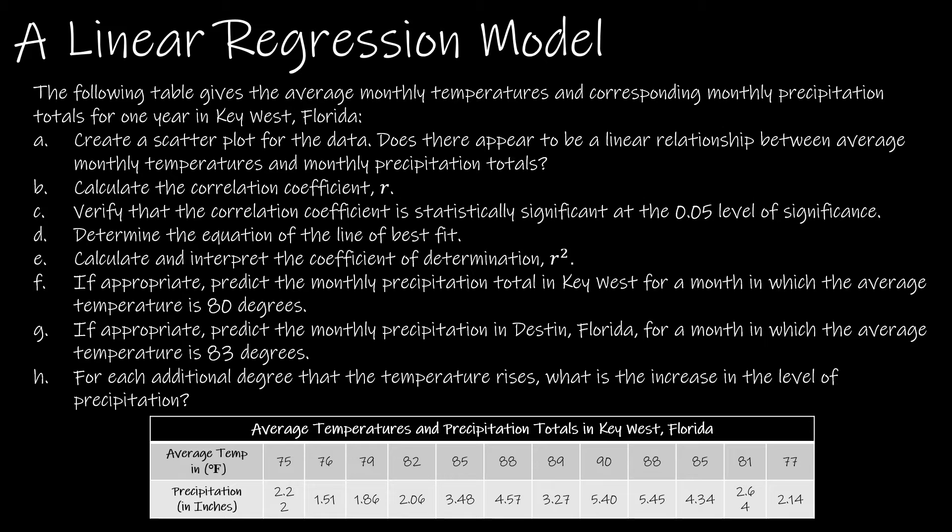If it's appropriate, which means that all of the conditions are met, predict the monthly precipitation total in Key West for a month in which the average temperature is 80 degrees. And then again, if appropriate, predict for Destin, Florida for a month in which the average temperature is 83 degrees. And then for each additional degree that the temperature rises, what is the increase in the level of precipitation? So good luck. Try them all first, and then we'll go through these together.